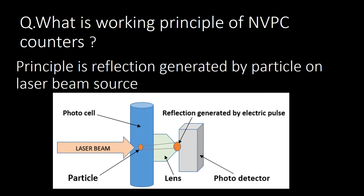What is the working principle of NVPC counters, or non-viable particle counting systems? The principle is based on the reflection generated by a particle on a laser beam source. These instruments are commonly used in the pharmaceutical industry. They contain a photocell; when a particle enters the path of the laser beam, it creates a reflection that generates an electrical pulse detected by a photodetector.